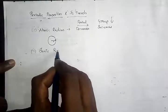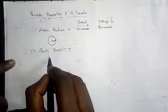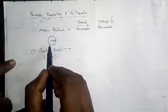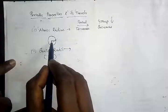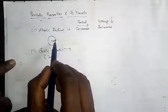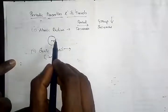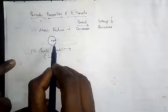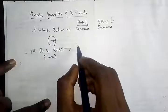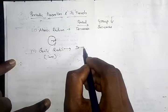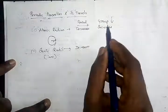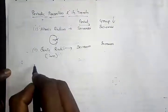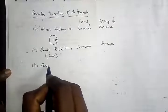The second point is ionic radii. This is generally for ions, but the concept is also applicable to atomic radii. It is the distance between the center of the nucleus and the electron cloud up to where the nucleus can exert its influence. Ionic radii also decreases when you go along the period, and when you go from top to bottom in the group, it increases.